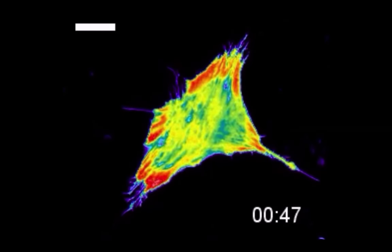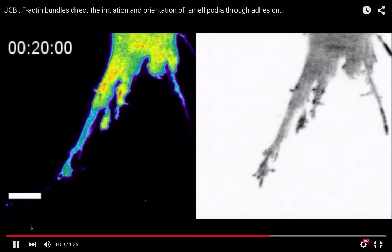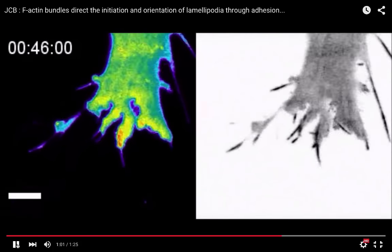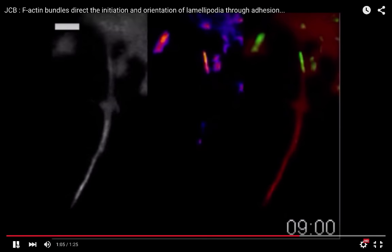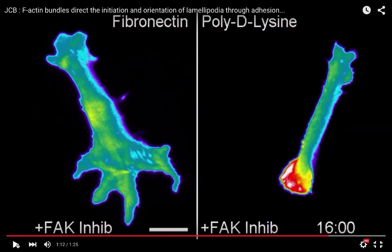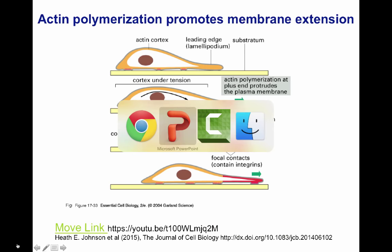Here is another cell also undergoing actin polymerization shown in red. You can appreciate the membrane being extended in the picture on the right (non-fluorescent), versus the left picture showing the polymerization of actin in the lamellipodium. Notice how quickly this happens when the movie is elongated. For the time of the lecture, I am going to stop this movie now to go to the next topic.